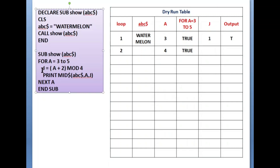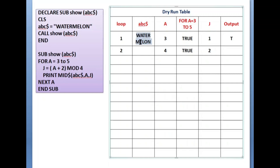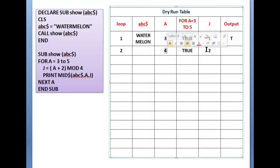When true, it goes inside the loop again. j = (a + 2) MOD 4. a is four, so four plus two is six; six MOD four — divide six by four, remainder is two. j equals two. PRINT MID$(ABC$, a, j) — ABC$ is still 'watermelon', starting position is four, two characters. Checking: w-a-t-e — fourth position is 'e', two characters gives 'er'. Output is 'er'.